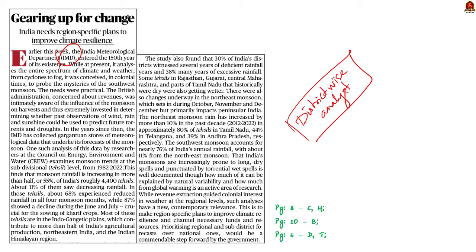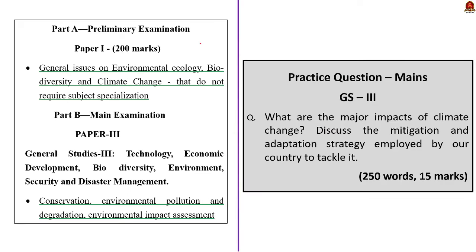The relevant syllabus to this topic is highlighted. The question is: What are the major impacts of climate change? Discuss the mitigation and adaptation strategy employed by India to tackle it. This is one of the easiest structural questions where two parts are clearly demarcated. In the first part of the answer, write about the impacts of climate change; in the second part, write about the mitigation and adaptation strategies of India.